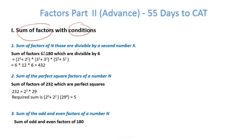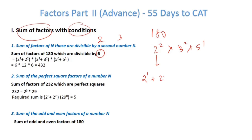Let's take a few examples. Sum of factors of 180 divisible by 6. So 180 is 2² × 3² × 5¹. For this number to be divisible by 6, it must include at least one 2 and one 3. So the powers of 2 we can take are 2¹ and 2². Similarly for 3, we take 3¹ and 3². For 5, we can take 5⁰ as well as 5¹. We can't take 2⁰ because then it would not be divisible by 6.